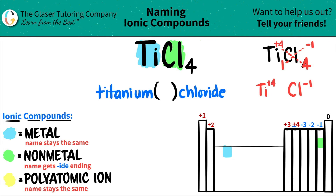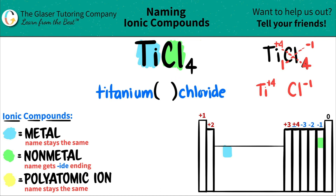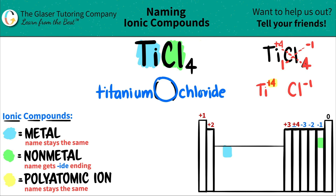Just do a check — chlorine, does it want to be a negative one? Chlorine is part of the negative one oxidation state group. So if this checks out, this has to check out. And the charge of titanium was a plus four. So we just have to write Roman numeral four in here, which is IV. So TiCl4 is just titanium(IV) chloride. And you are done.